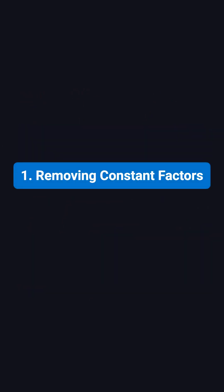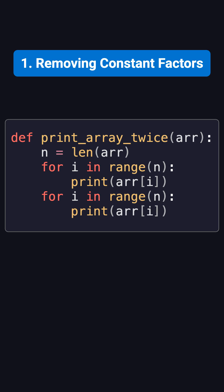First, let's look at removing constant factors. Imagine we have a program that prints each element of an array twice. The code might look something like this.